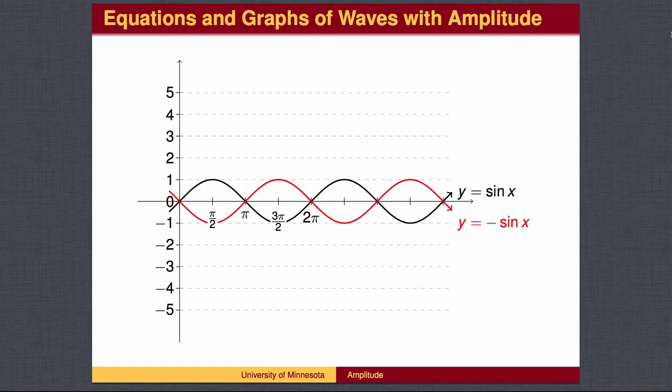If the multiplier is negative, the wave will be reflected across the x-axis. In other words, the graph will be flipped top to bottom. The graph of y equals negative sine of x is the graph of y equals the sine of x flipped top to bottom, so that from 0 to pi over 2, the wave goes down rather than up. We still say the amplitude is 1.